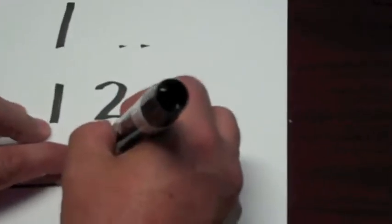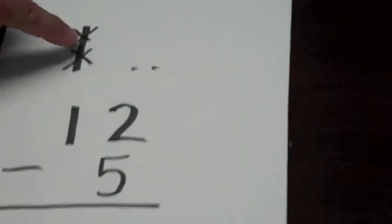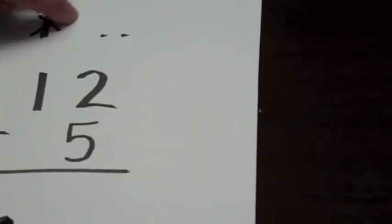As I start the subtraction process, I can't take five away from this two. So I'm going to recreate that picture of ten units by crossing this stick twice to represent two bundles of five, making this worth ten units.